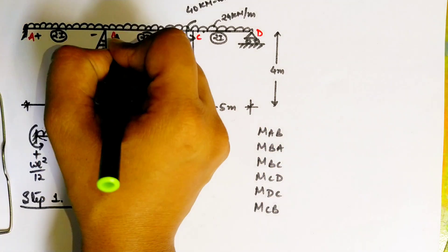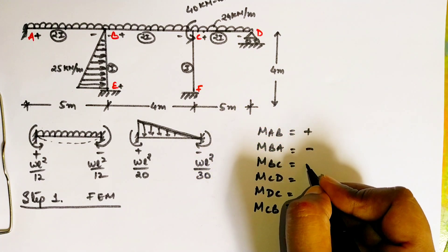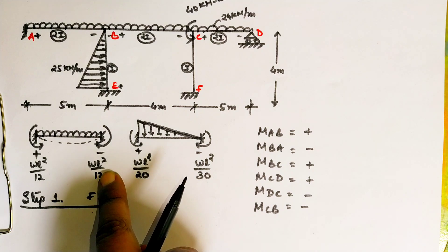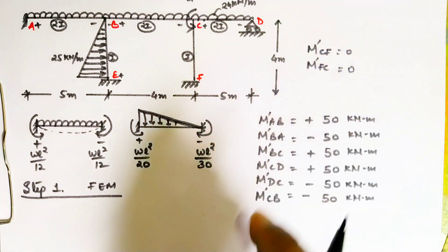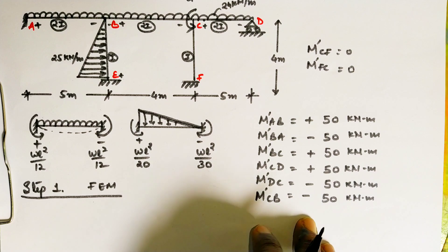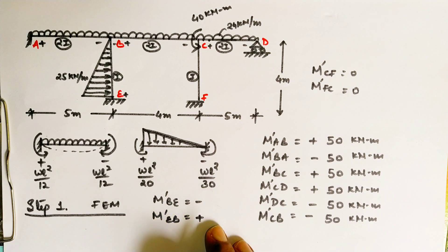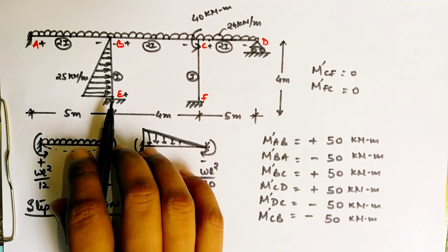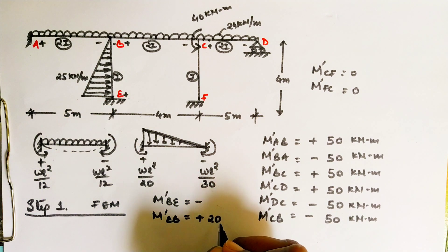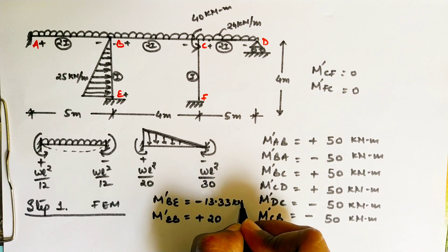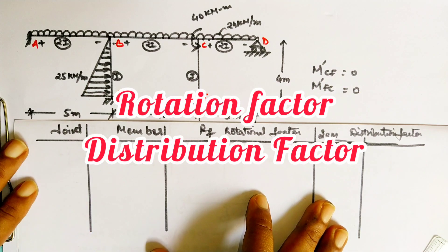Fixed end moments for AB, BC, and CD will be the same because they have the same kind of loading and EI is also the same for these members. Clockwise is negative, so the right side is negative and the left side is positive. On the leg there is no load, so we put that equal to zero — marked as a dash. We substitute the values of W and L into the formula and calculate the final answers.